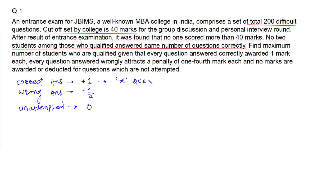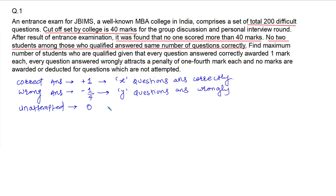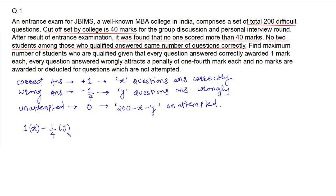Let's consider: total x questions are answered correctly, total y questions answered wrongly, and the remaining questions — out of 200, minus x minus y — are unattempted. Now the total score is calculated as: 1 times x, minus one-fourth times y, plus 0 times (200 minus x minus y).